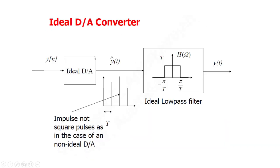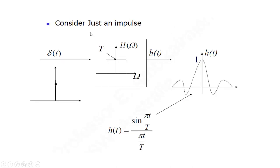Let's see how this filter can smooth out the output voltage of the DAC. For an ideal D2A converter, the output should be impulses rather than staircase voltage. This is the frequency response of the ideal low pass filter — it is flat from minus pi by capital T to pi by capital T. These impulses are applied to the ideal low pass filter to recover the signal back.